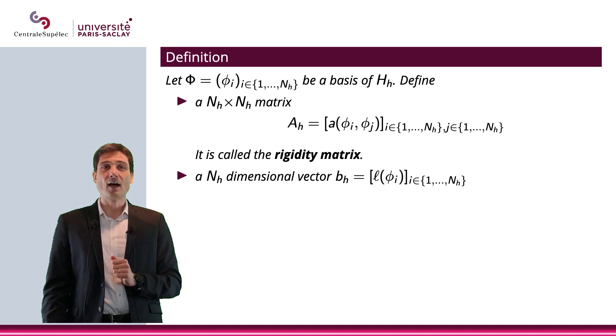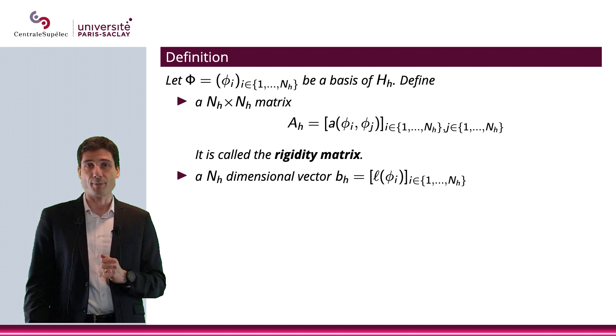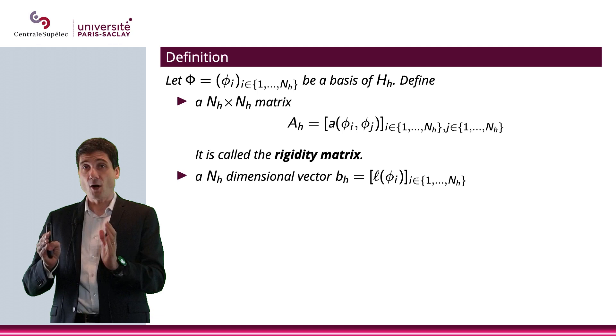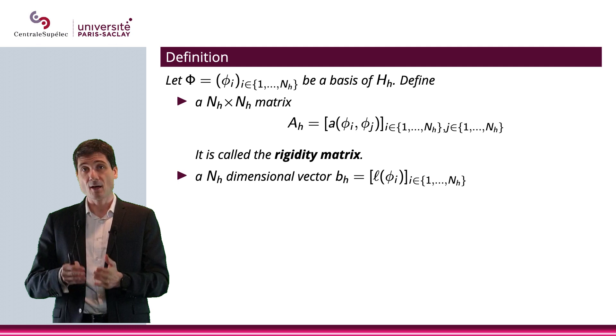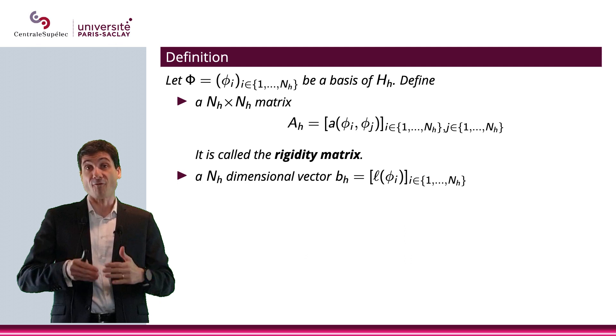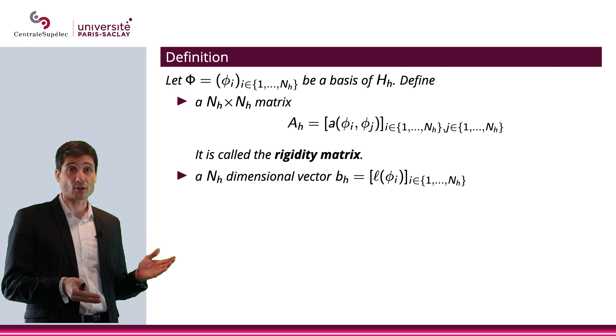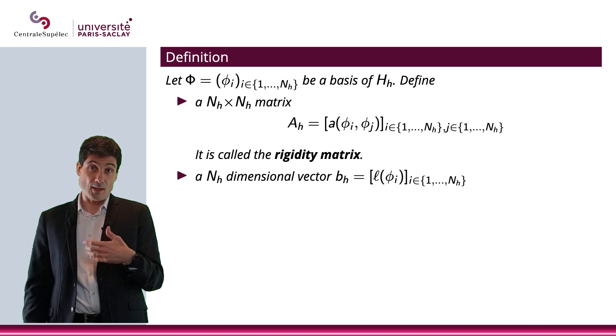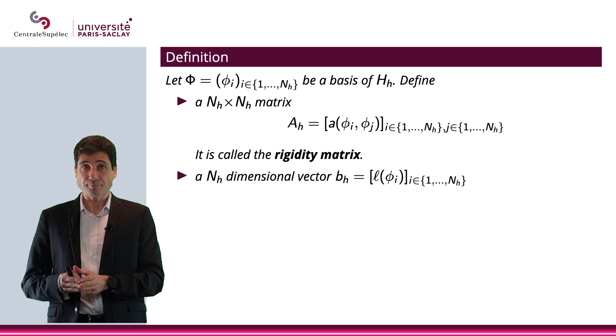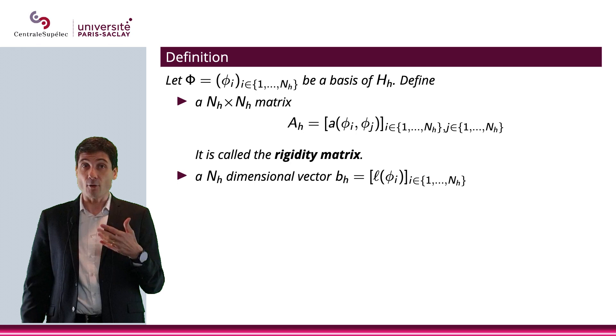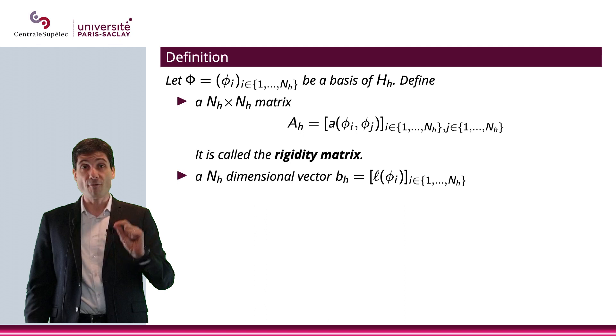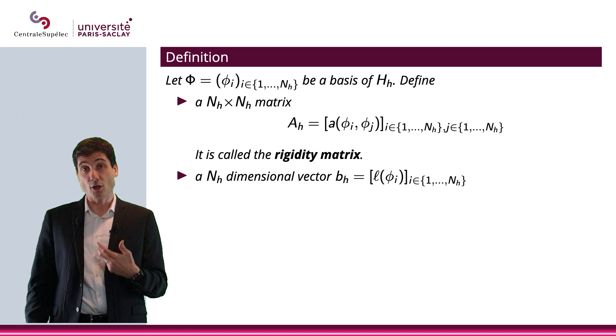Now, let me give you a definition, the definition of the rigidity matrix and of a vector bₕ. But let me first consider a basis of Hₕ. Again, Hₕ is a linear space of finite dimension. So, I can consider a basis with a finite number of elements. And the number of elements, obviously, is the dimension of the space. So, that's Nₕ. So, let me call φ₁ to φₙₕ the basis, Nₕ vectors that will be a basis of Hₕ. I will consider, I will build a matrix A or Aₕ, that will be the bilinear form applied to φᵢ, φⱼ, and that will be the component of the matrix at line i and column j. So, that will be called the rigidity matrix.